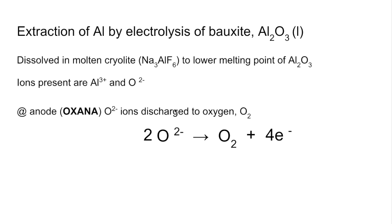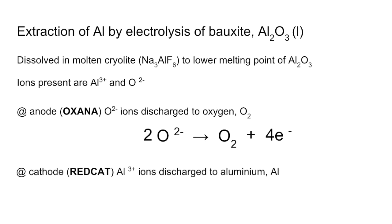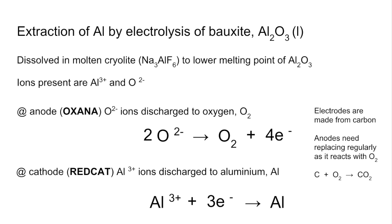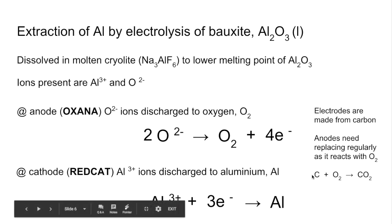At the cathode, the Al3+ ions are attracted to the negative cathode — Red Cat, reduction takes place, it gains electrons. The Al3+ ions are discharged and become aluminium. In the half equation the atoms already balance with one Al on each side, but we have a 3 plus charge on the left and no charge on the right, so we gain 3 electrons before the arrow. Also note the electrodes are made from carbon in this process, and the anodes need to be replaced frequently because oxygen formed reacts with the carbon electrode to form CO2, so they burn away over time.